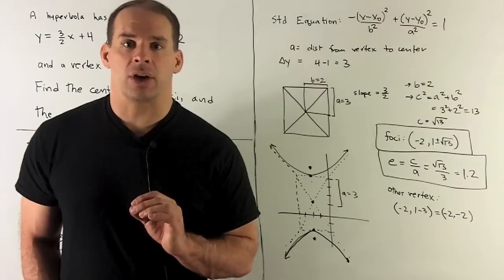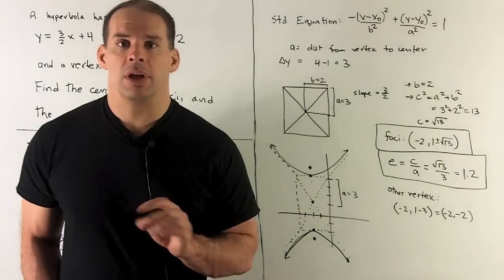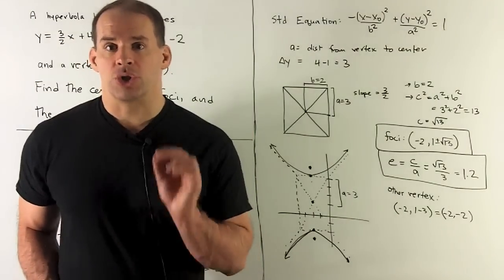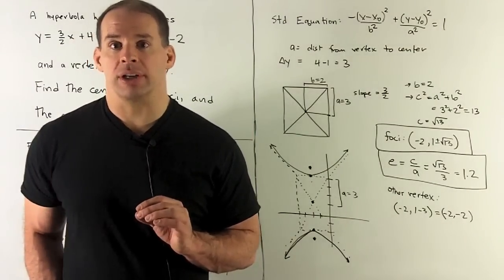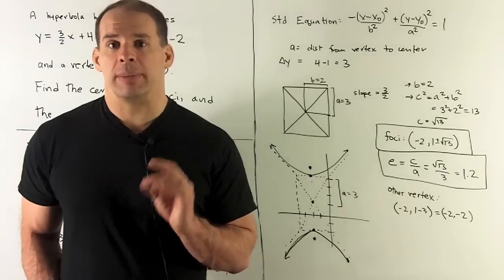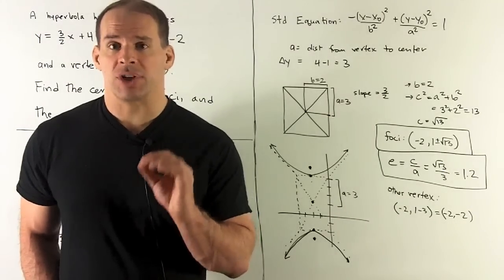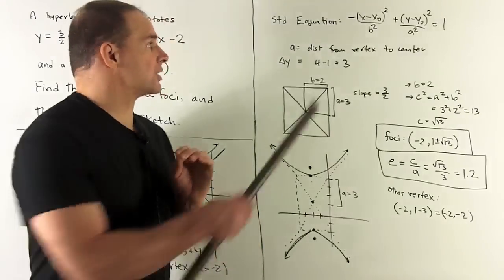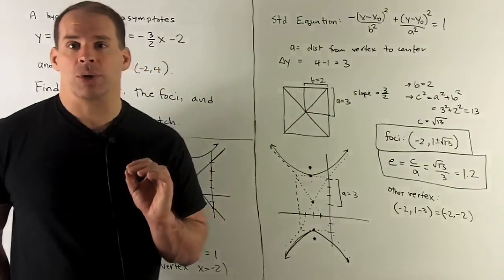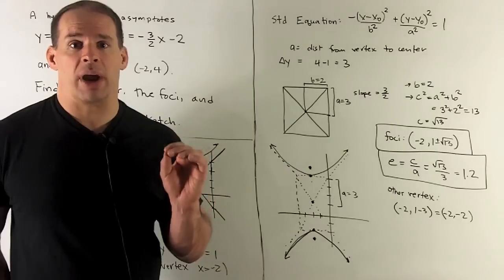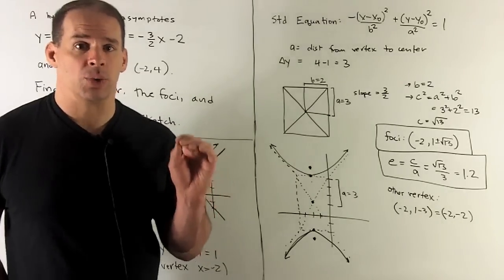Next, let's look at the standard equation for this hyperbola. Since the branches face up and down, our transverse axis is in the y direction. So that's going to mean the x squared term picks up a minus sign. So we're going to have our standard equation looking like this: y minus y zero squared over a squared minus x minus x zero squared over b squared equals 1.